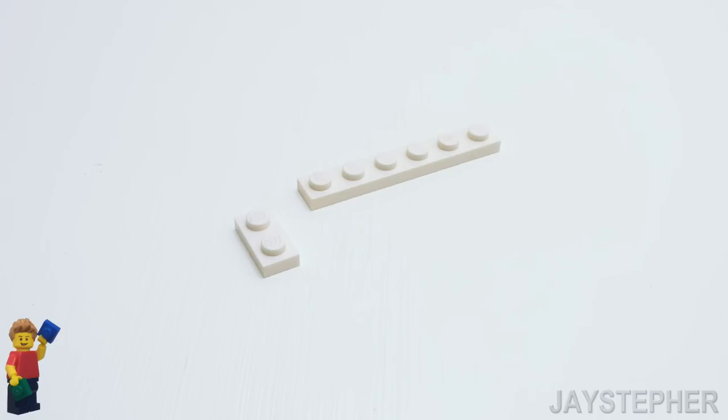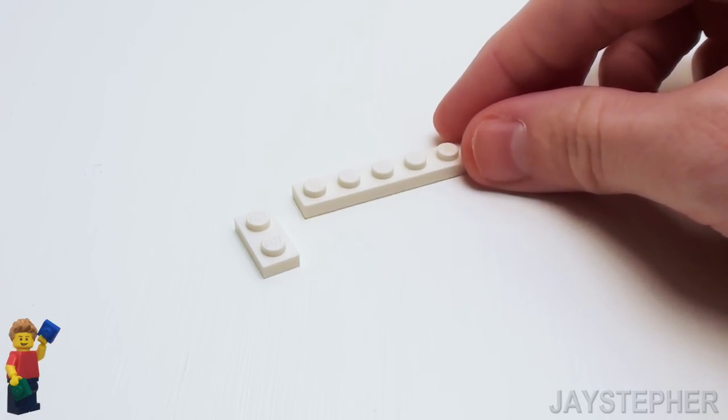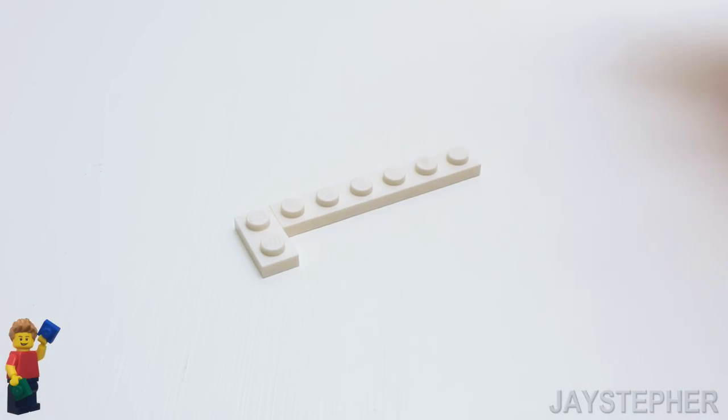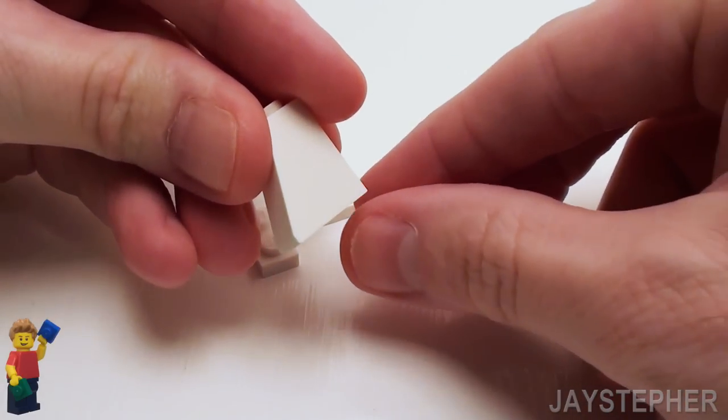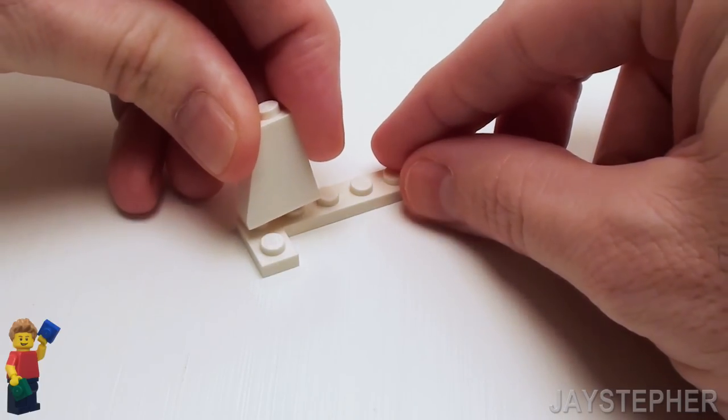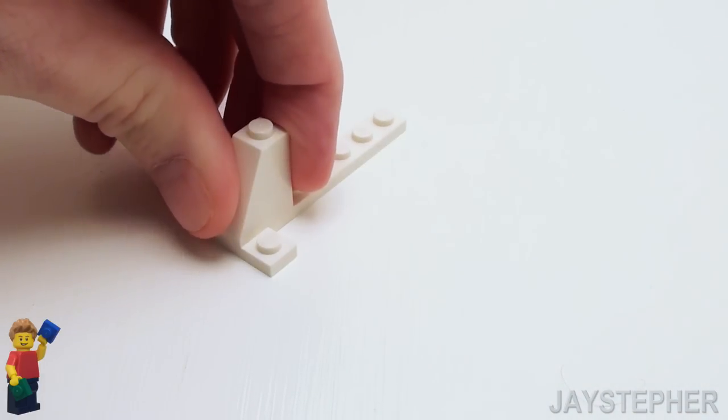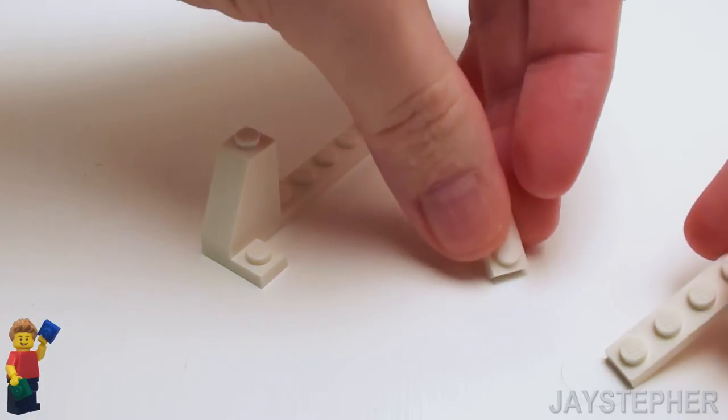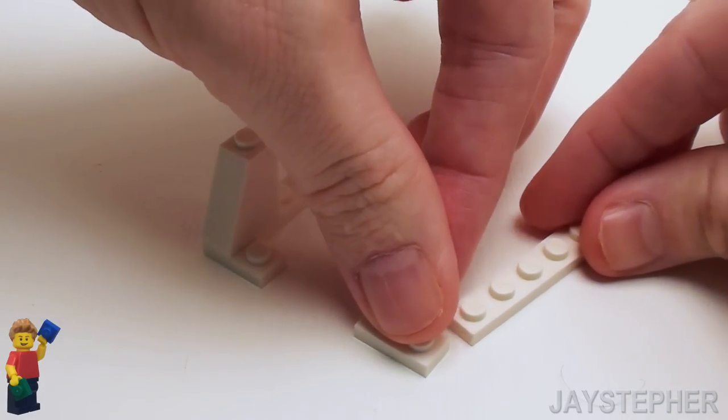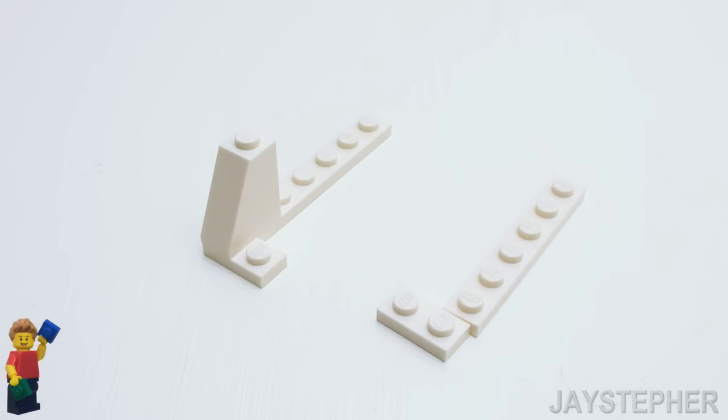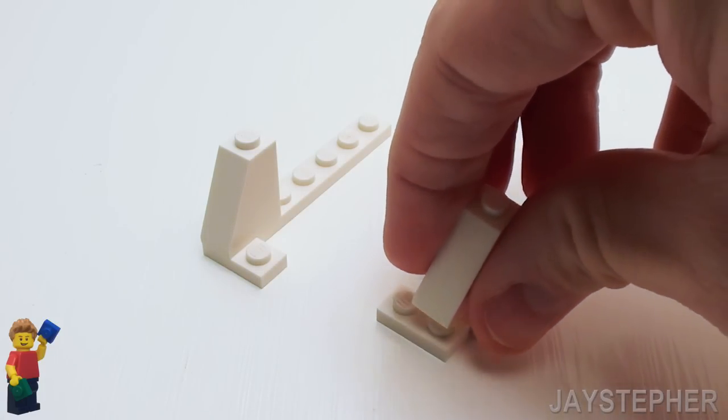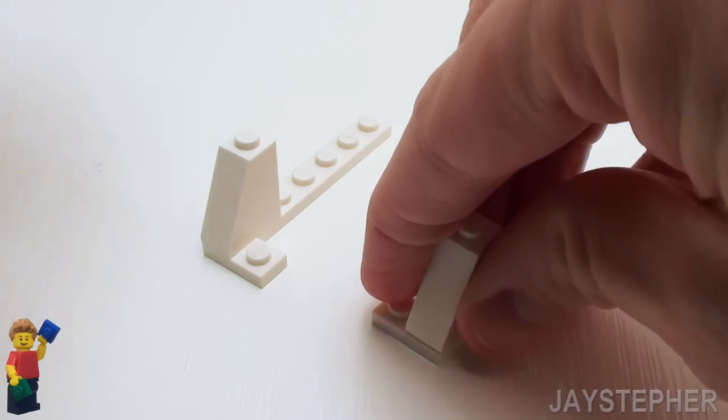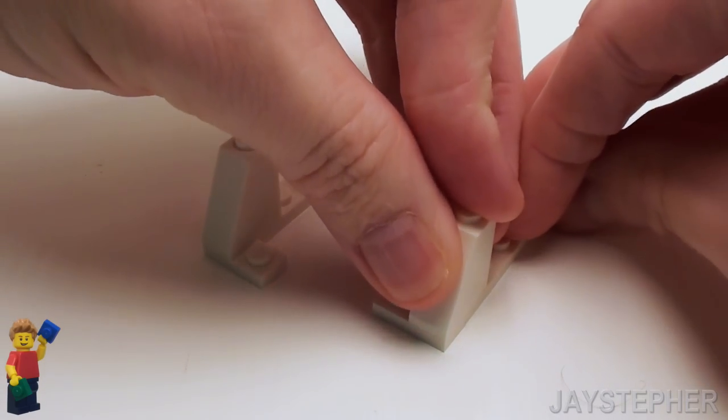Let's begin the base with a 1 by 2 and 1 by 6 plate. Set the plates as shown. Next let's take a 1 by 2 by 2 slope. Place it on the corner to lock it together. Let's take another 1 by 2 and 1 by 6 plate. Place them as shown and place another 1 by 2 by 2 slope on this joint.